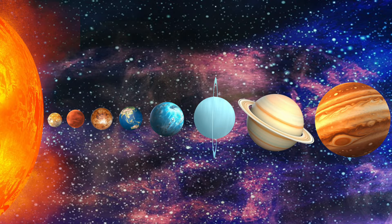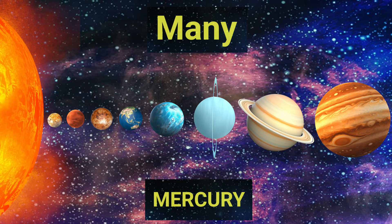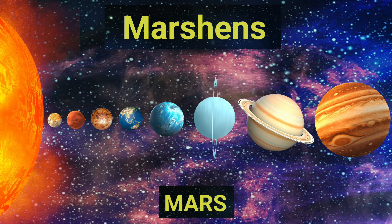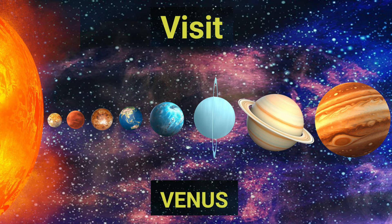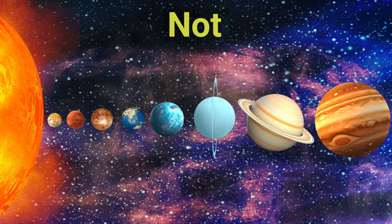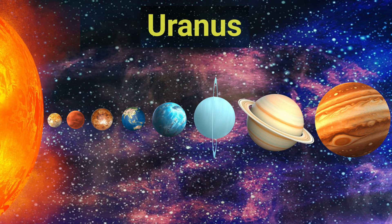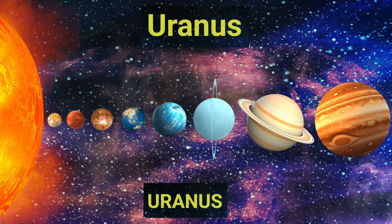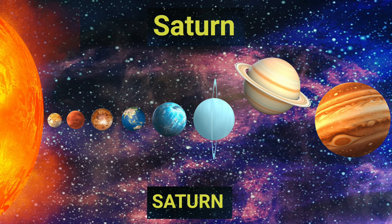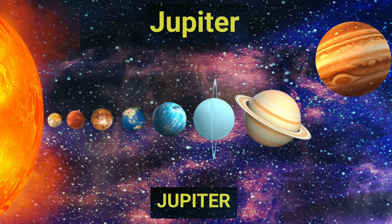Check it out. Many — Mercury. Martians — Mars. Visit — Venus. Earth — Earth. Not — Neptune. Uranus — Uranus. Saturn — Saturn. Jupiter — Jupiter.